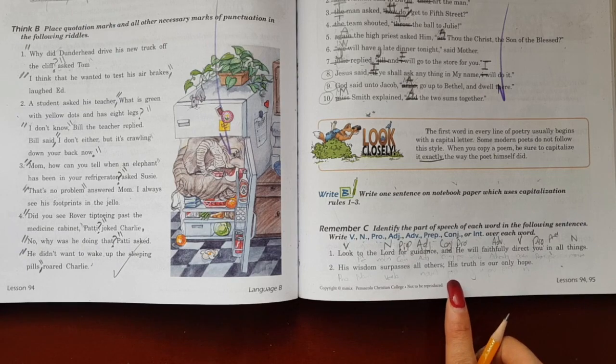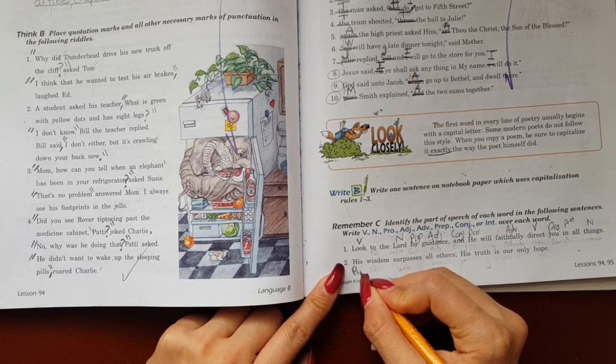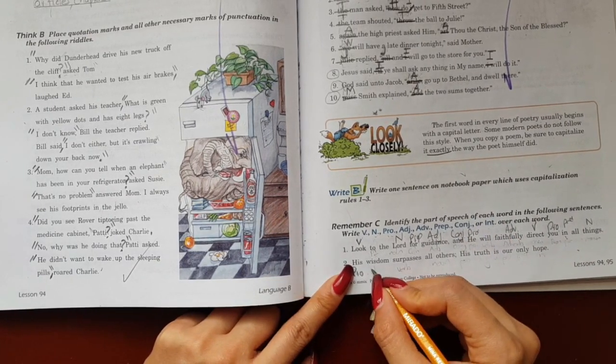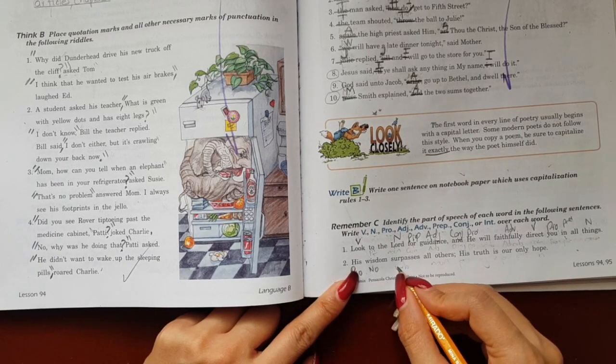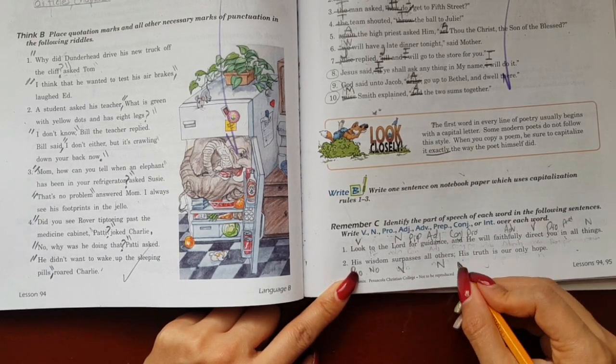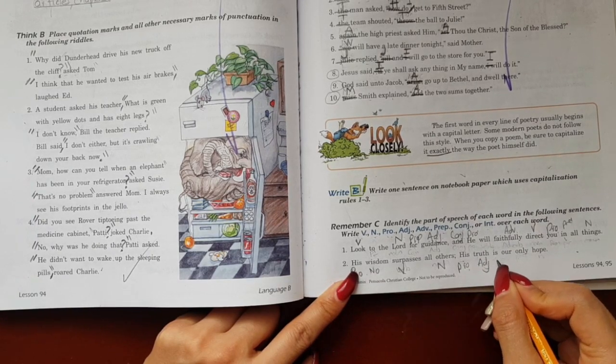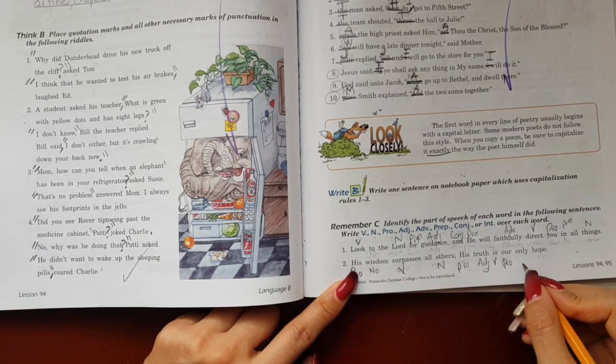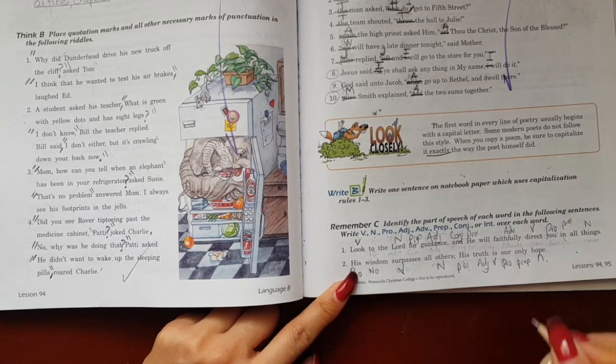So now here we can put the next part. And here we have his, it is a pronoun. Remember that we have three pronouns - subjective, objective, possessive. Wisdom, a noun. Surpasses, is a verb. All others, is a noun. His, is a pronoun. Truth, is an adjective. Is, is a verb. Our, is a pronoun. Only, is a preposition. Hope, is a noun, a hope. You see.